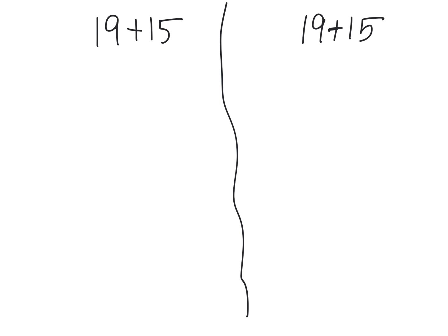Let's take a look at 19 plus 15 and we'll solve it in two different ways. One where we're adding the tens first, and then the second time we're going to add the ones first, but there's going to be a twist on that. So let's start with adding the tens first.